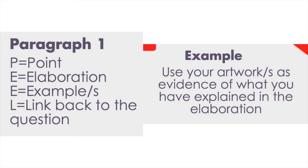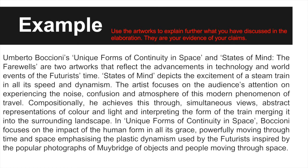Now let's look at the examples. We've done the point and elaborated on it, so now I need to use artworks to support what I've been claiming — they're my evidence for the futurist ideals about world events. I've chosen Umberto Boccioni for my examples. You could use any futurist artist or a collection of them, but since this is only one paragraph, I've decided to use Boccioni. Remember that your examples, which are your artworks, are your evidence of what you've already claimed in your elaboration. 'Umberto Boccioni's Unique Forms of Continuity in Space and States of Mind: The Farewells are two artworks that reflect the advancements in technology and world events of the futurist time.'